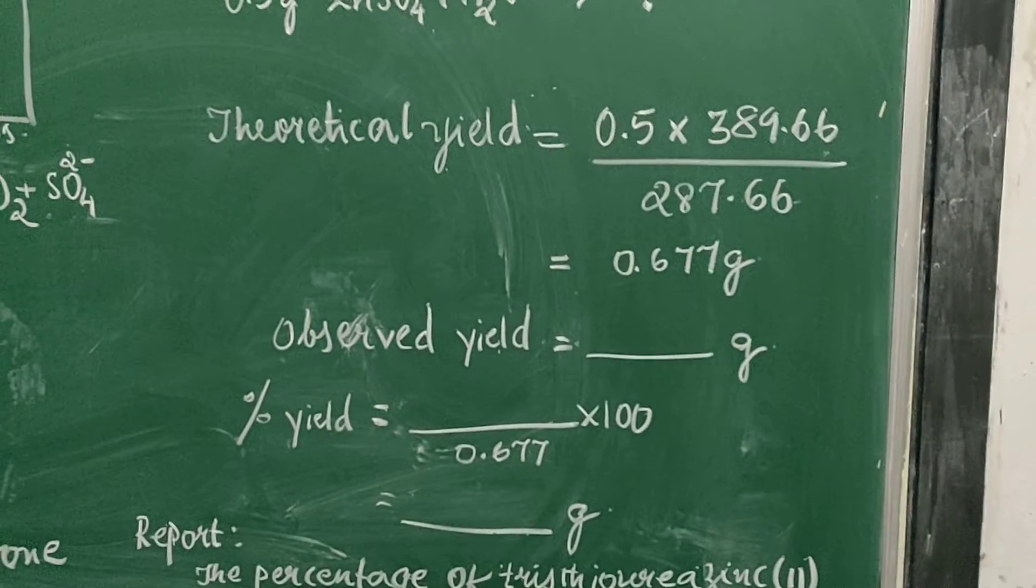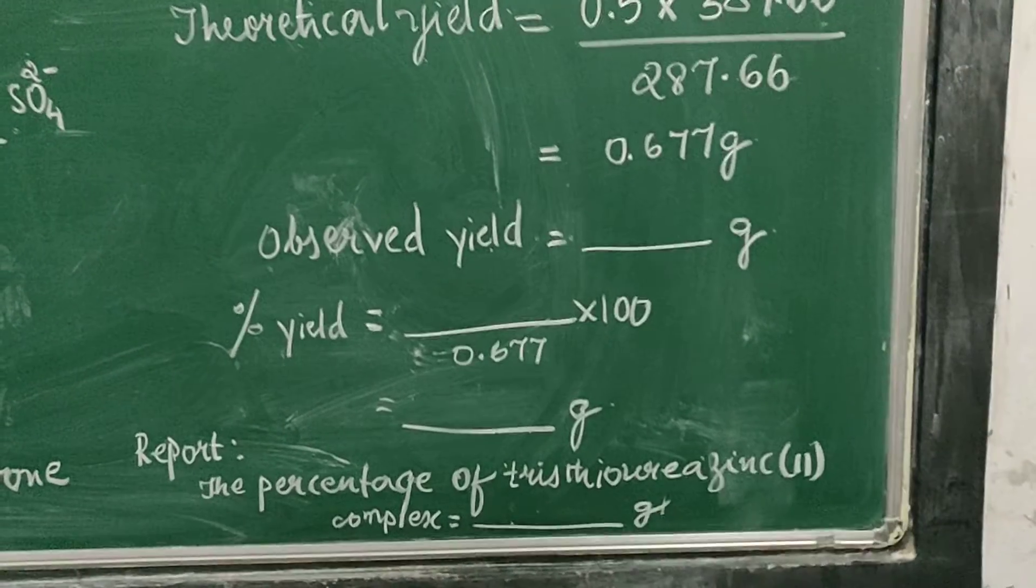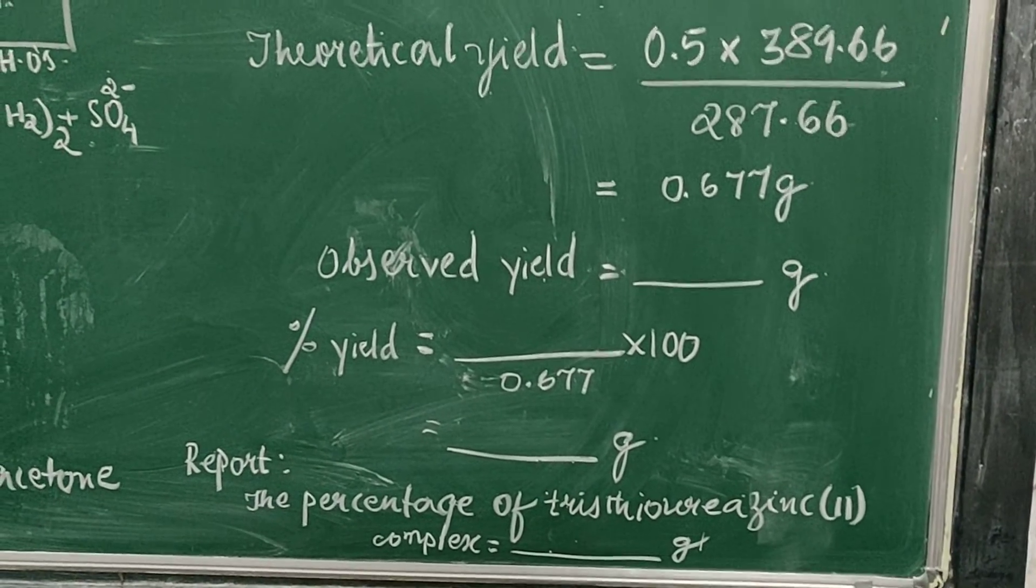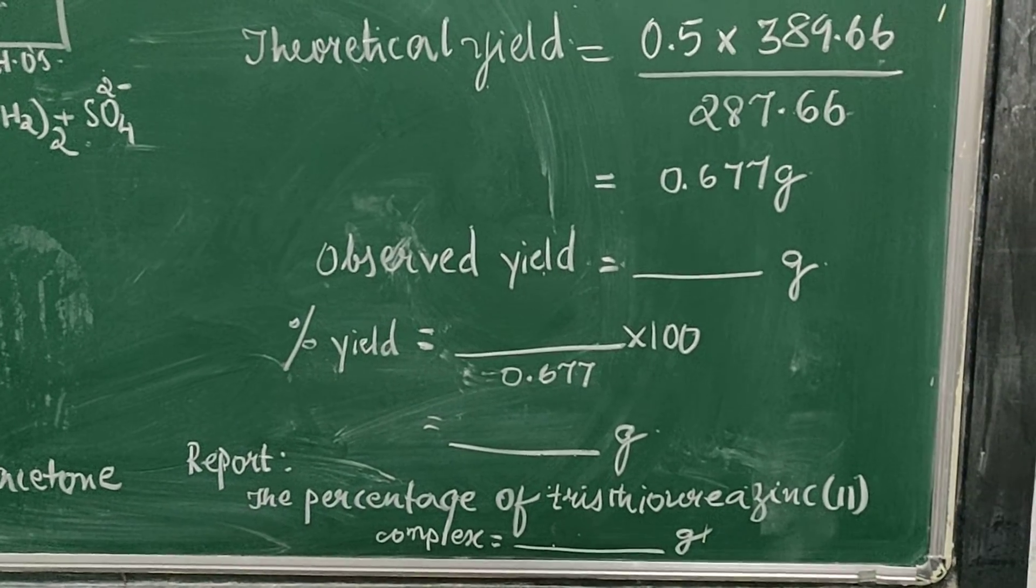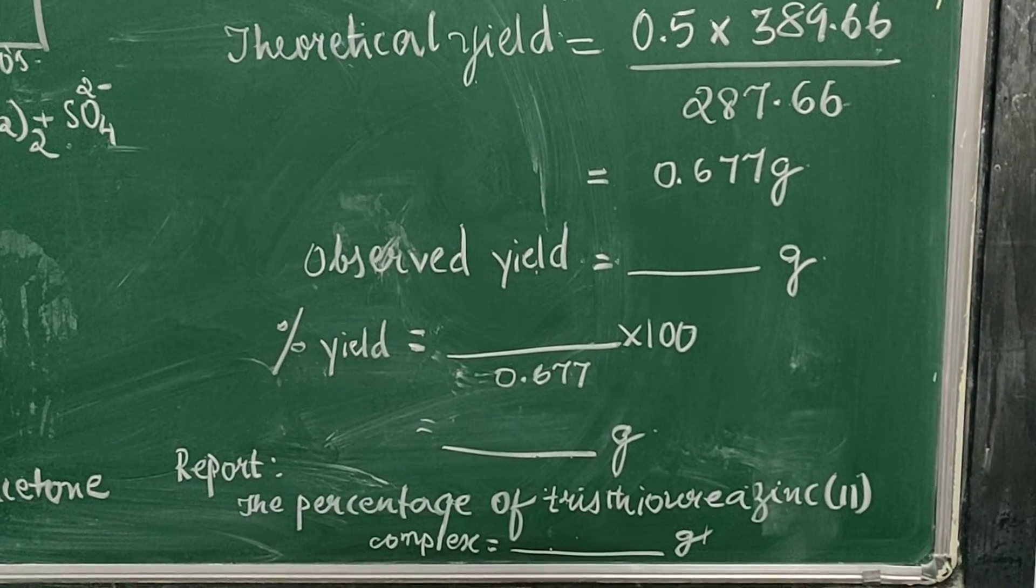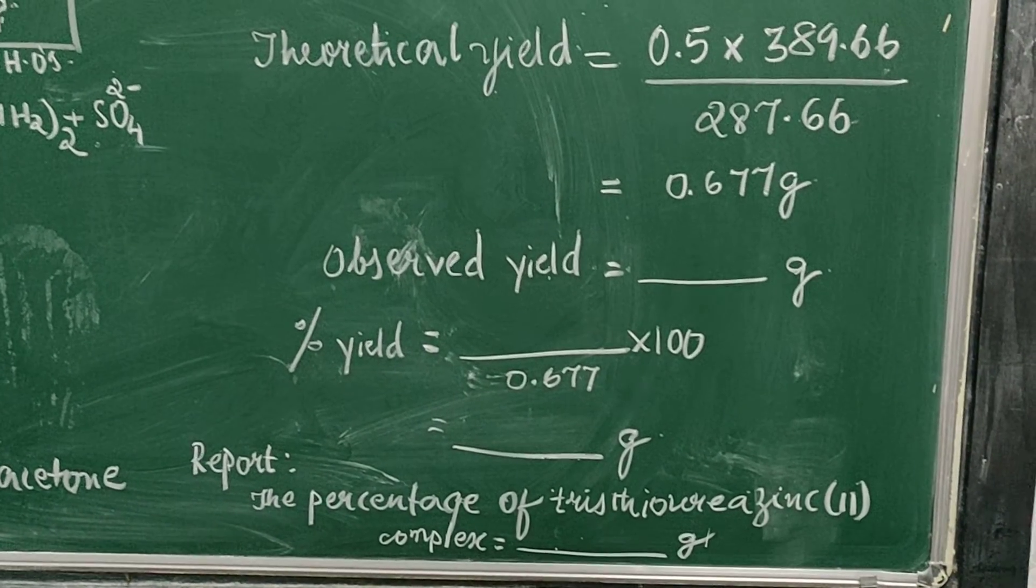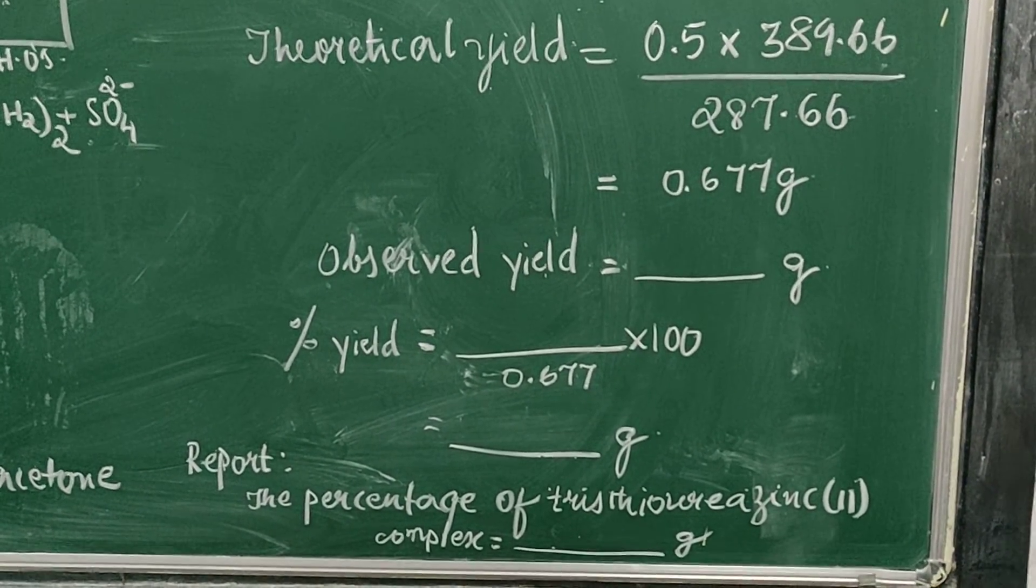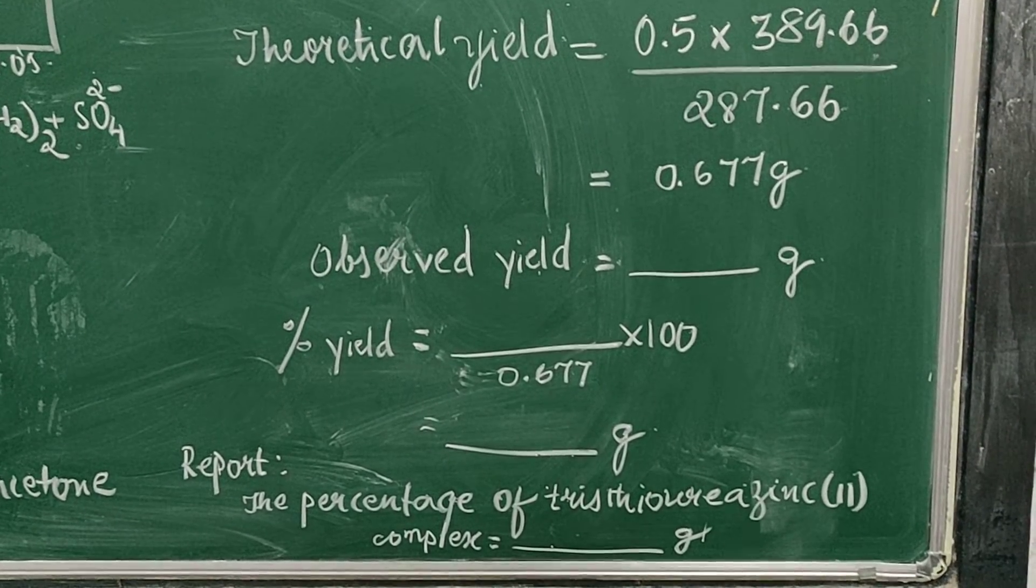We would have weighed the complex and that will become the observed yield which we have prepared. Percentage yield is equal to observed yield by theoretical yield times 100. So we have to do this calculation and then finally report the percentage of tris(thiourea) zinc(II) sulfate complex.